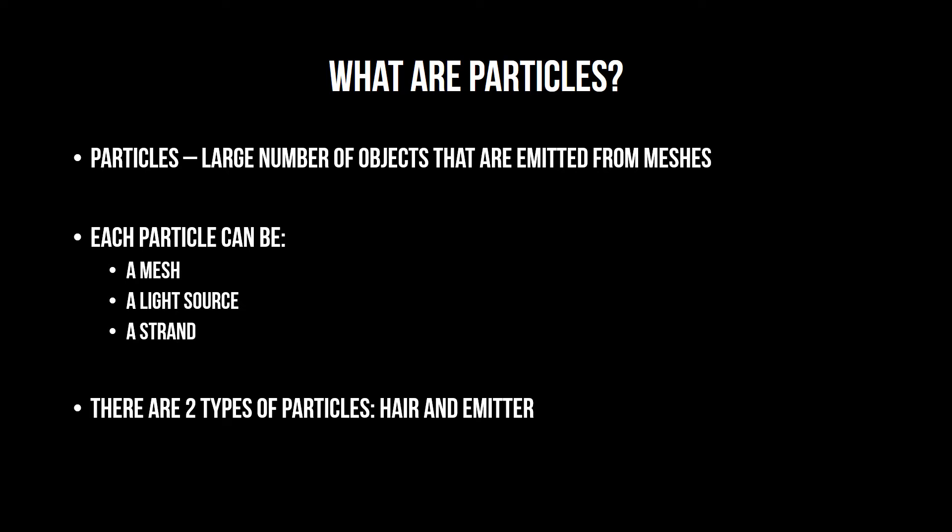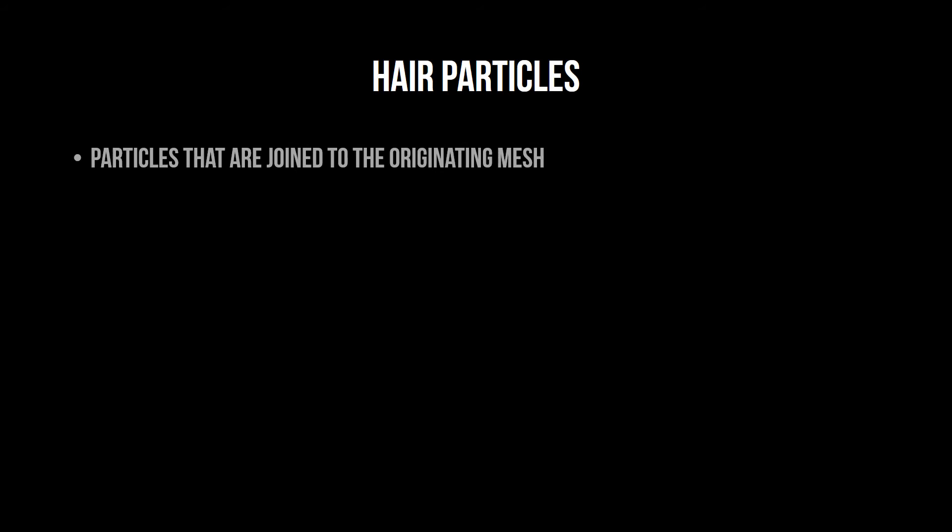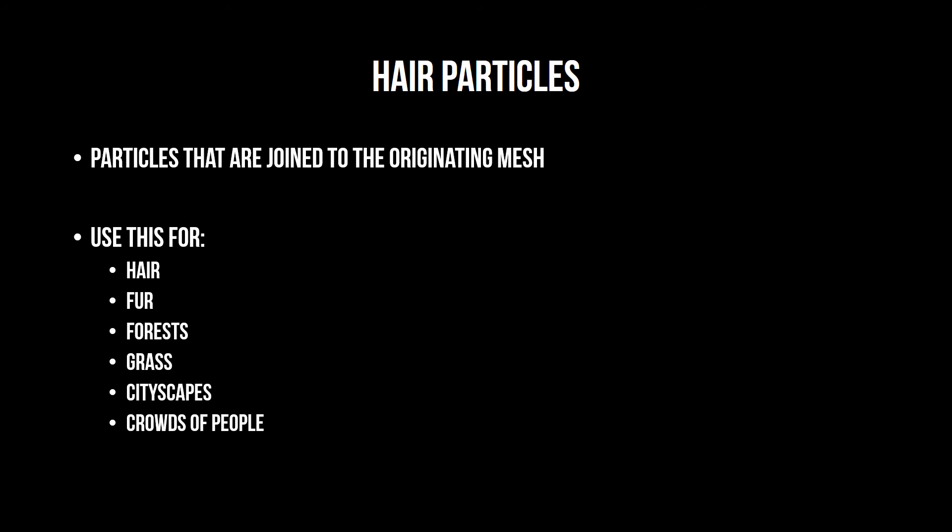There are two types of particles. First is the hair type. The hair type particles are used to create hair, fur, grass, forests, and cityscapes. Hair particles tend to be joined to the original mesh.